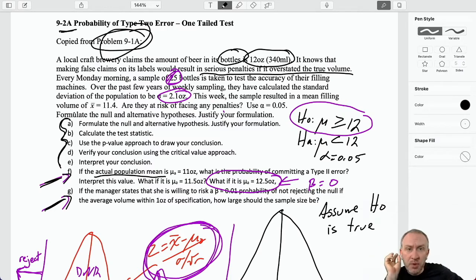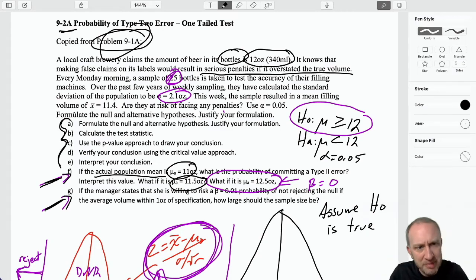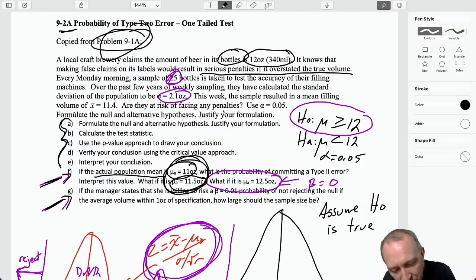Part F was calculating the probability of committing a type 2 error, so that's incorrectly accepting a false null, given different values for what the actual population mean is. Calculating those probabilities is kind of a theoretical concept, because calculating the probabilities relies on having this information that we don't have. If I had that information in reality, why am I doing the test if I already know what it is?